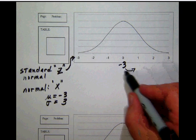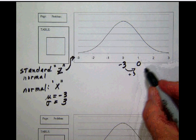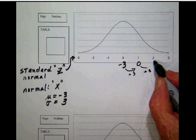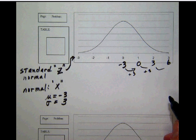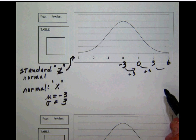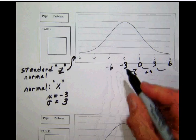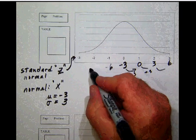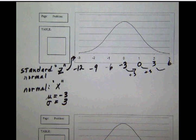We're going to go by threes as we go across to the right. -3 + 3 = 0, then + 3 = 3, then + 3 = 6. Going in the other direction, we subtract: -3 - 3 = -6, then -9, then -12. These are the equivalents.